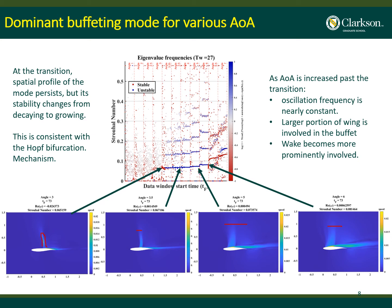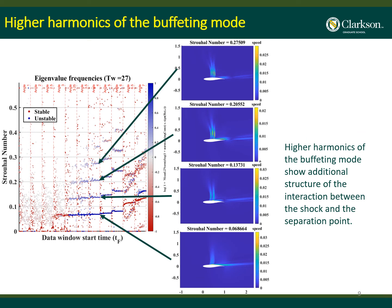This is consistent with the Hopf bifurcation mechanism for transition to buffeting. We can also see additional harmonic modes appearing. We analyzed angle 4.00 and made the spatial profile of these harmonic modes. The harmonic mode analysis reveals additional structures of the interaction between the shock and the separation point — you can see a first sharp feature, a second sharp feature, and more, showing additional flow structure detail.